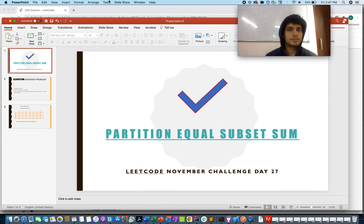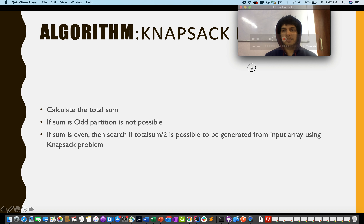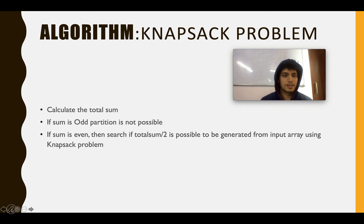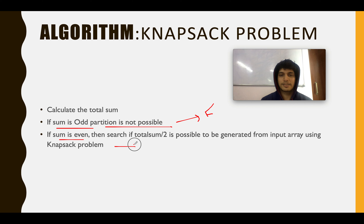Let's look at the algorithm. The partition subset sum problem is essentially a knapsack problem. First, calculate the total sum. If the total sum is odd, partition is not possible — return false. If the sum is even, search for total sum divided by 2 from the input array. If that sum can be generated using the knapsack algorithm, return true; otherwise return false.